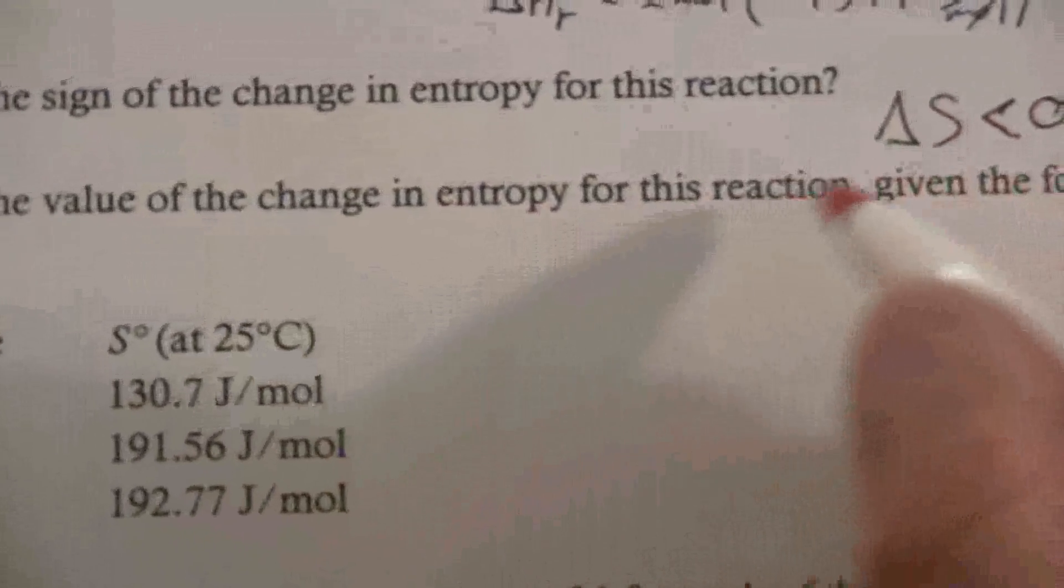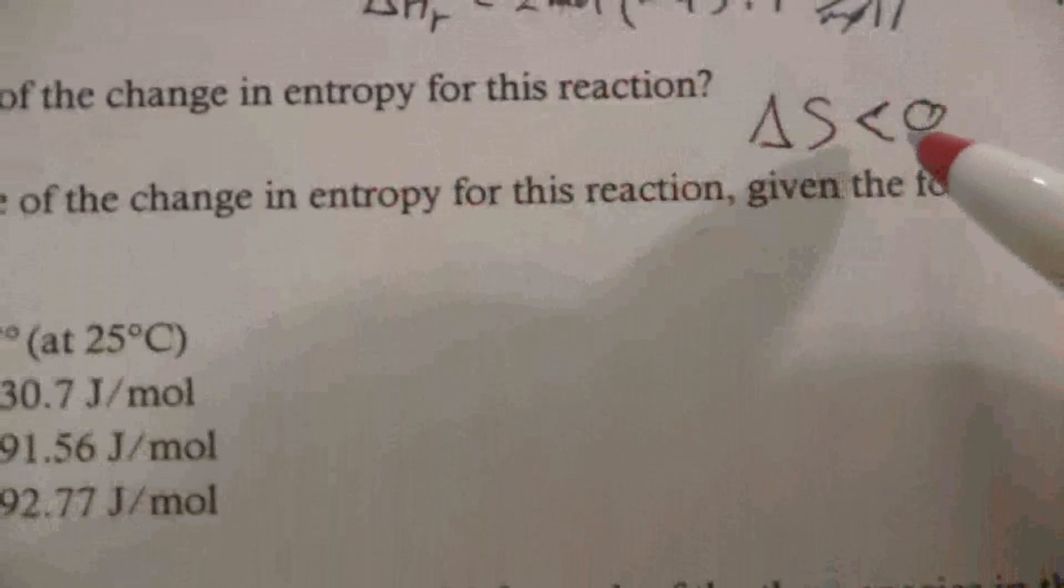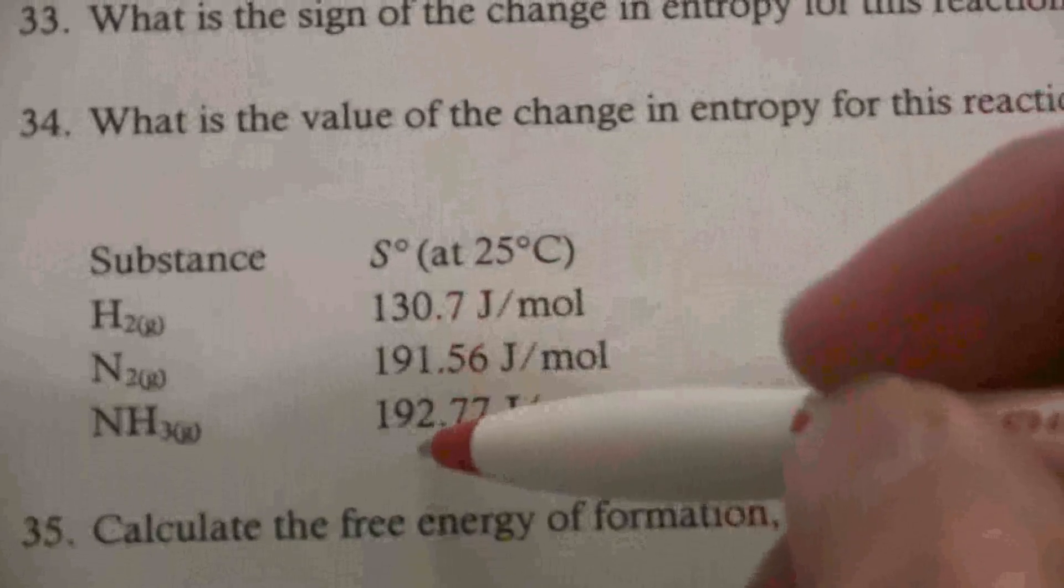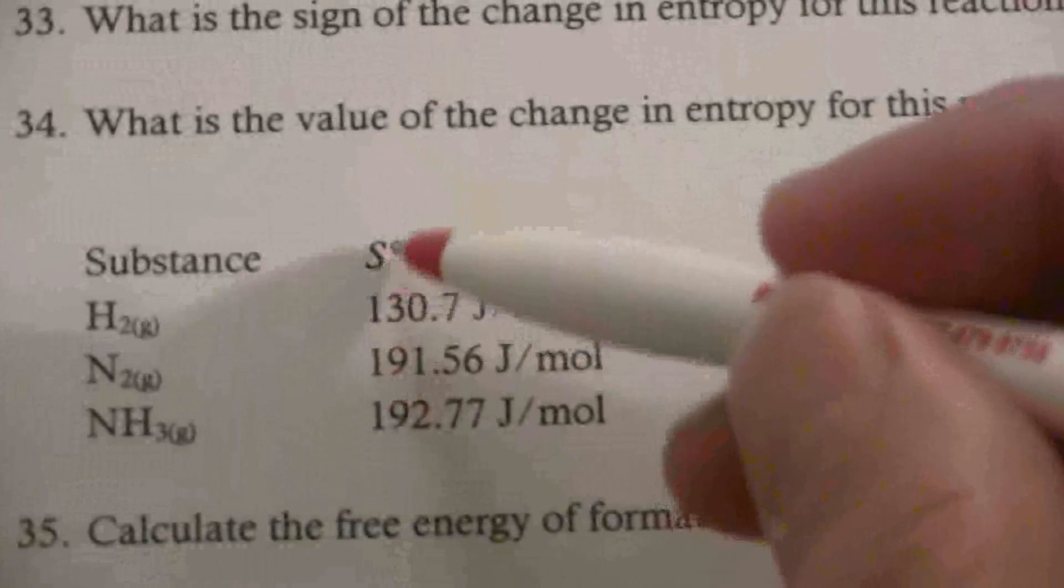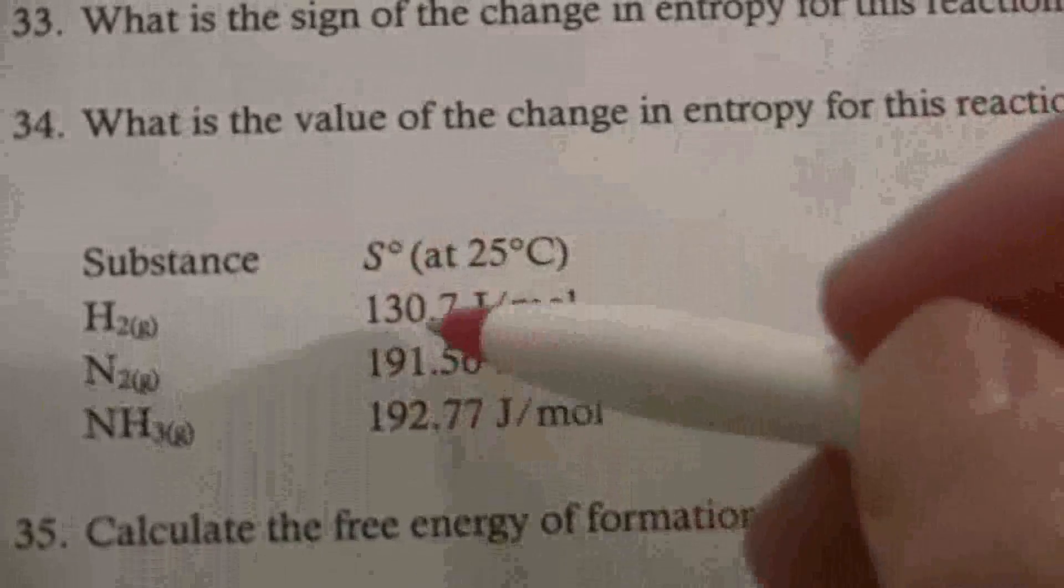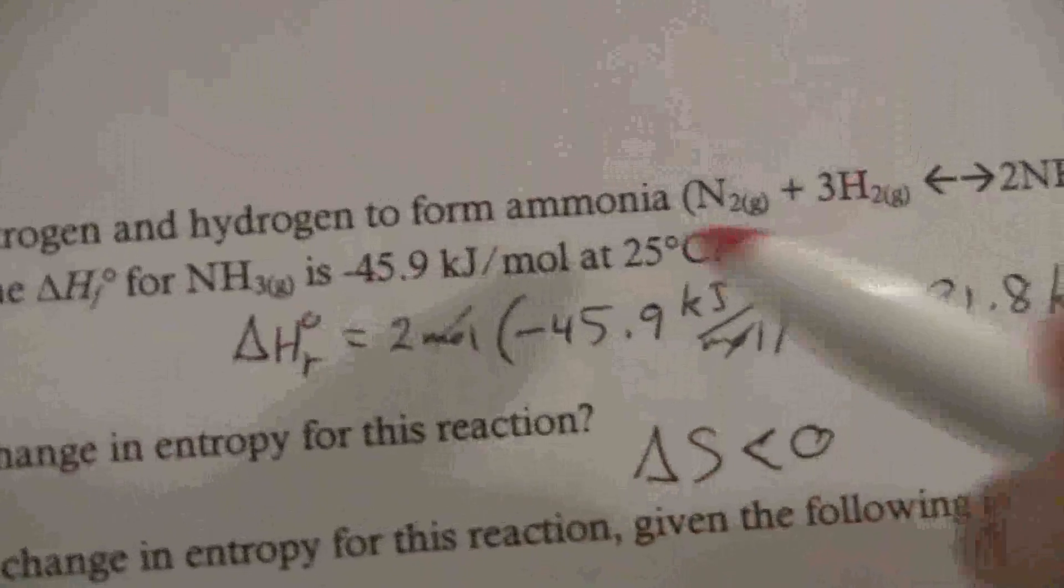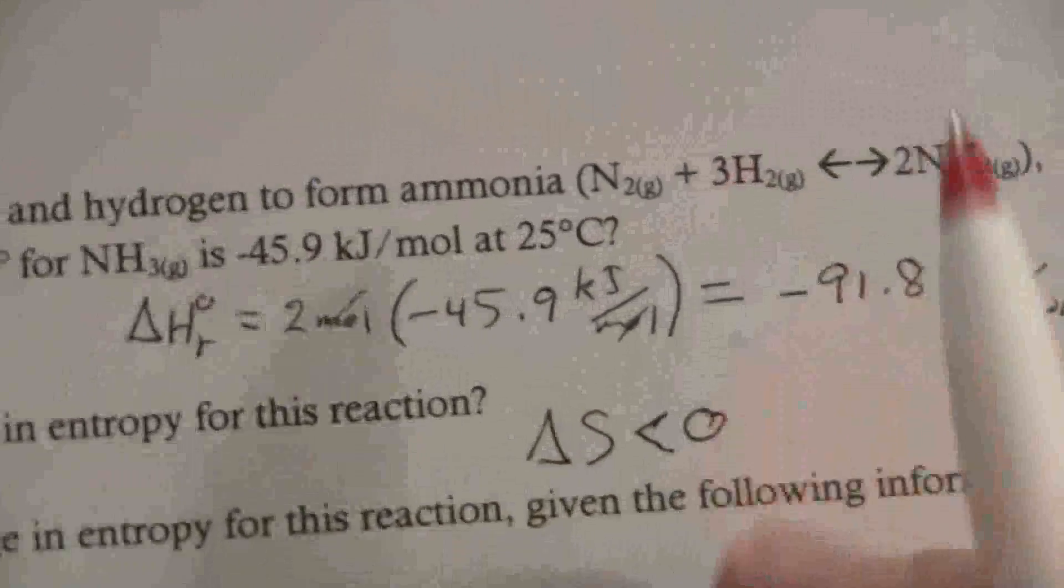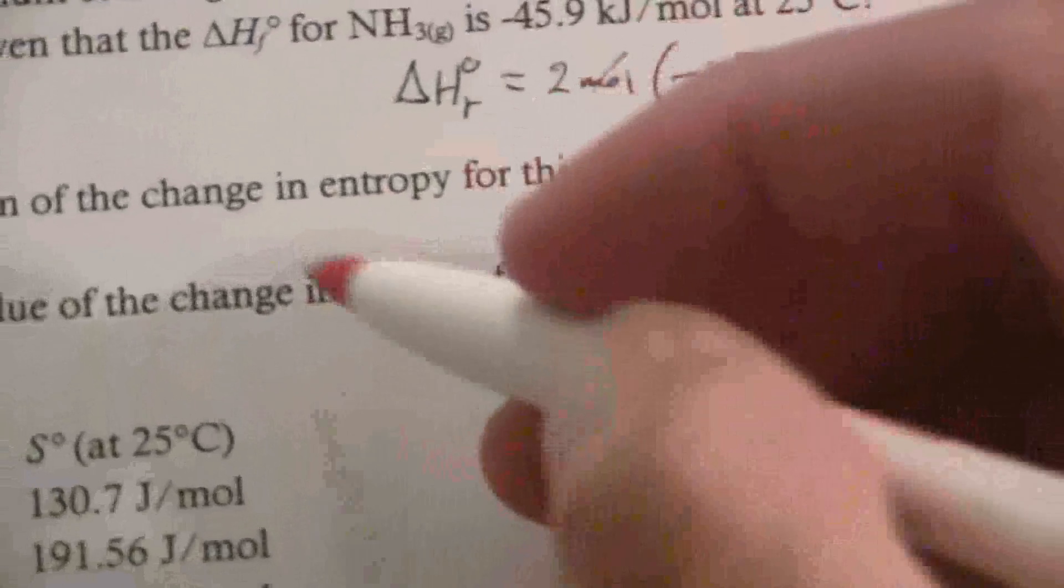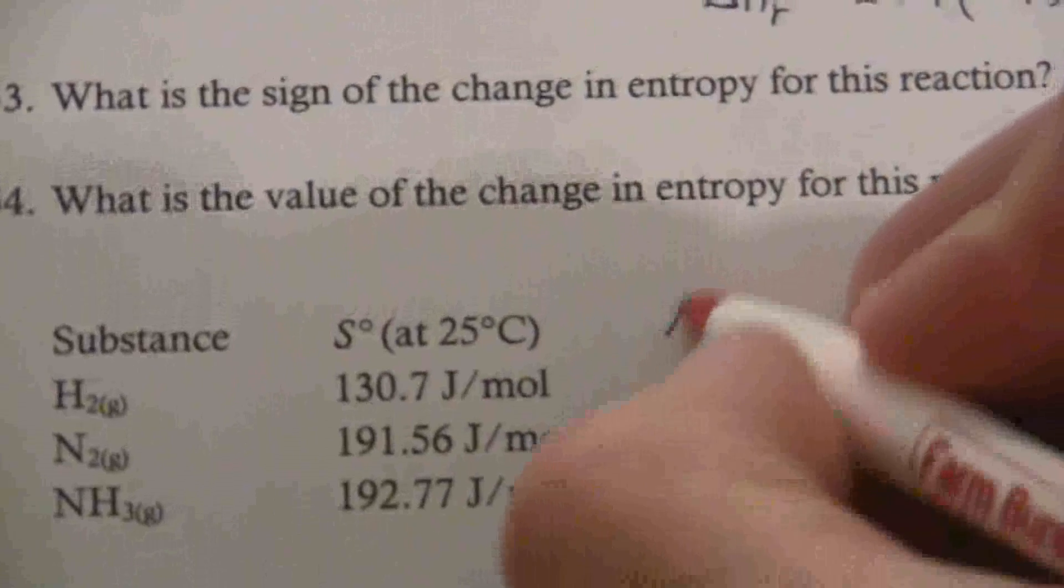So what is the value of the change in entropy for this reaction? So now we know its sign, let's find the actual value, given the following information. So here we have the absolute entropies at standard conditions for each of our species here. So we find it in just the same way we did, except the reactants are not zero.